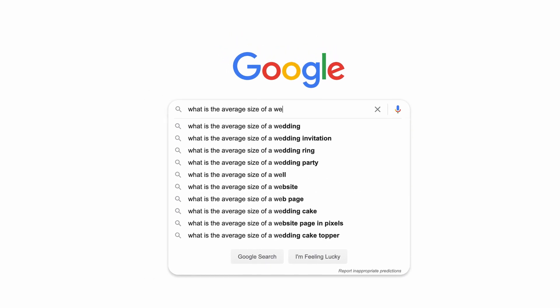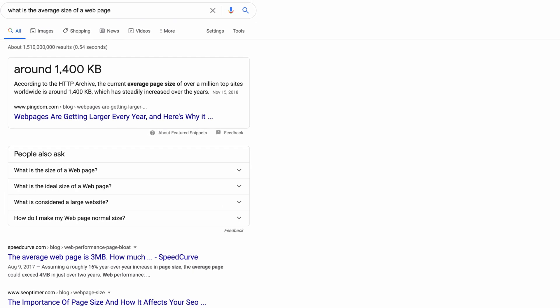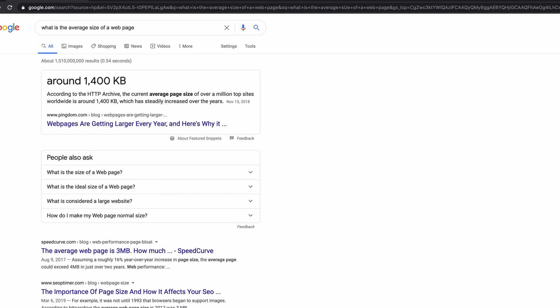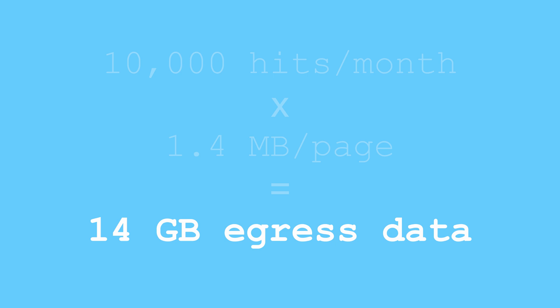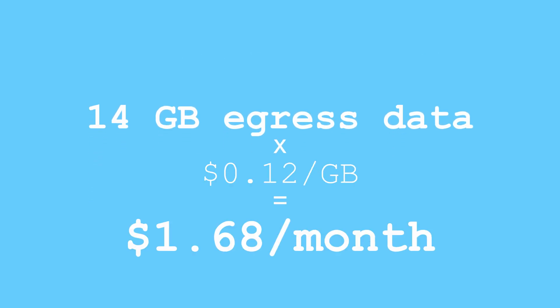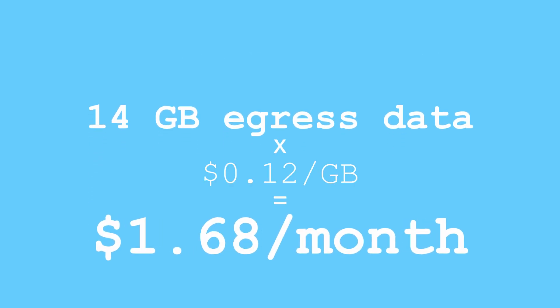Pricing generally starts around 12 cents per gigabyte for servers located in the U.S. Given that the average size of a web page is around 1.4 megabytes according to the HTTP Archive, if your website sees 10,000 page views per month, you'll end up being billed for 14 gigabytes of data, which is $1.68 per month — assuming your traffic originates from outside Australia and China.